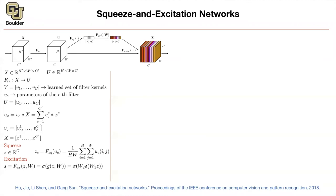Excitation is a fully connected network: you take Z, linearly transform it with a matrix, apply a non-linearity, linearly transform again, and apply sigmoid — giving a number between zero and one. It's like an attention mechanism: you're deciding channel-wise which channel to pay more attention to. W1 reduces the dimension from C to C/r, and W2 expands it back to C.